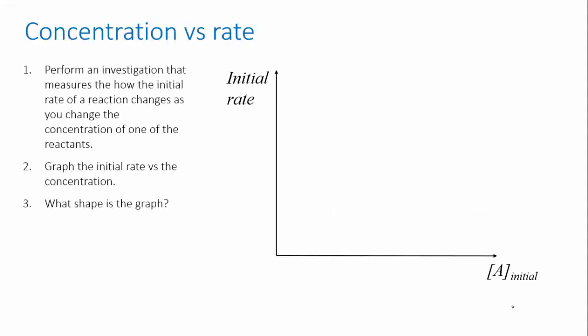There's no way of determining a rate law just by looking at a chemical equation. It has to be experimentally determined, and this is done by studying how the rate changes as you change the concentration of a reactant, just as we discussed in the last video.